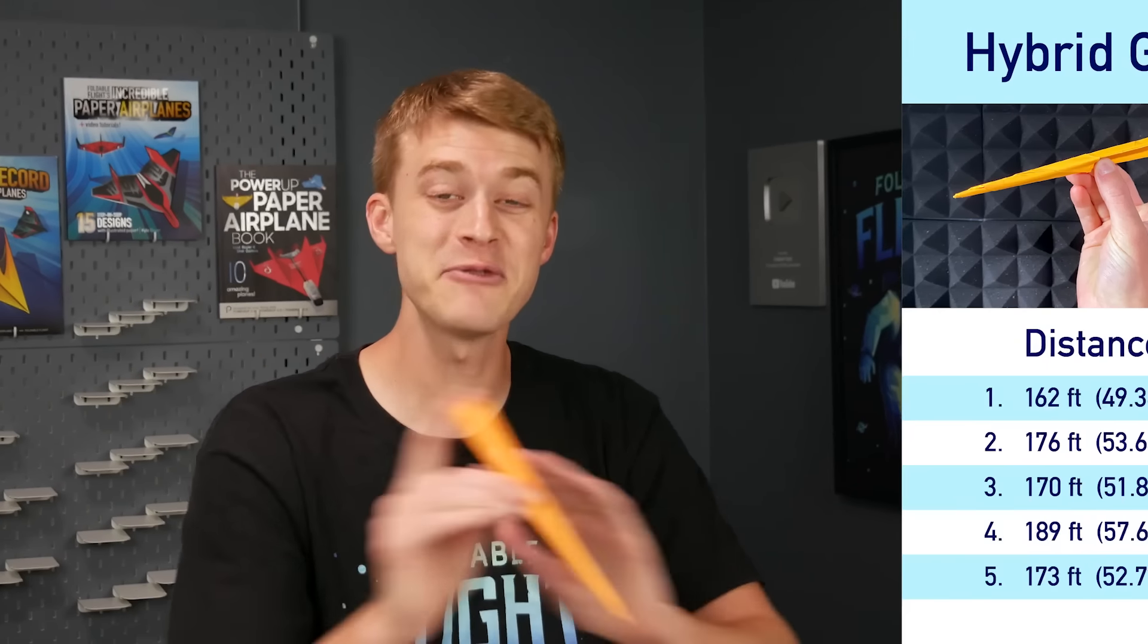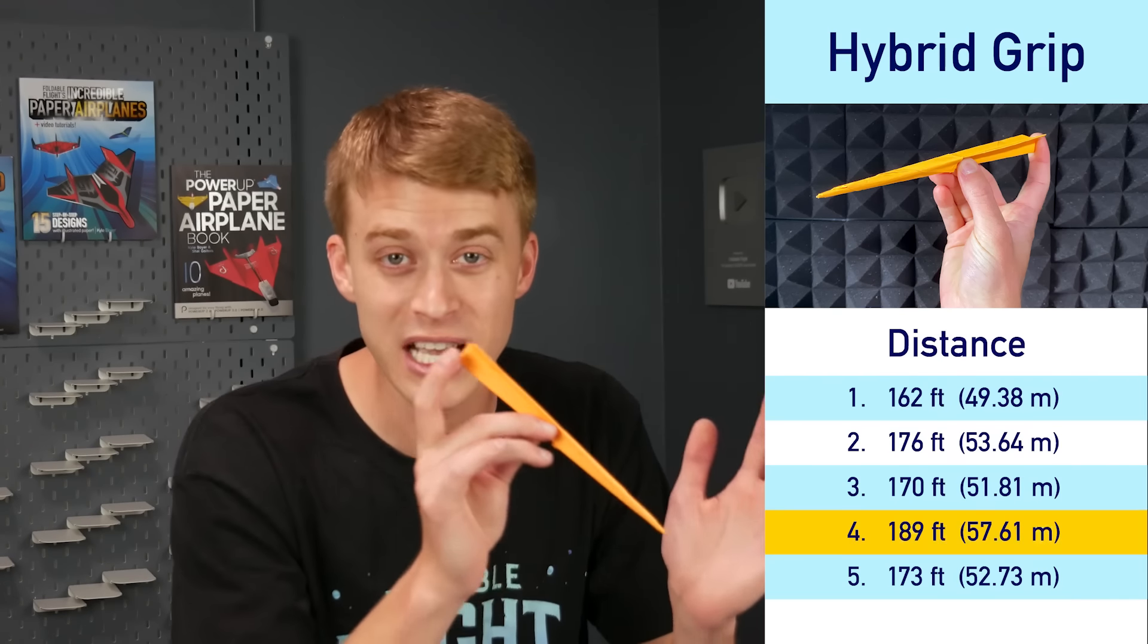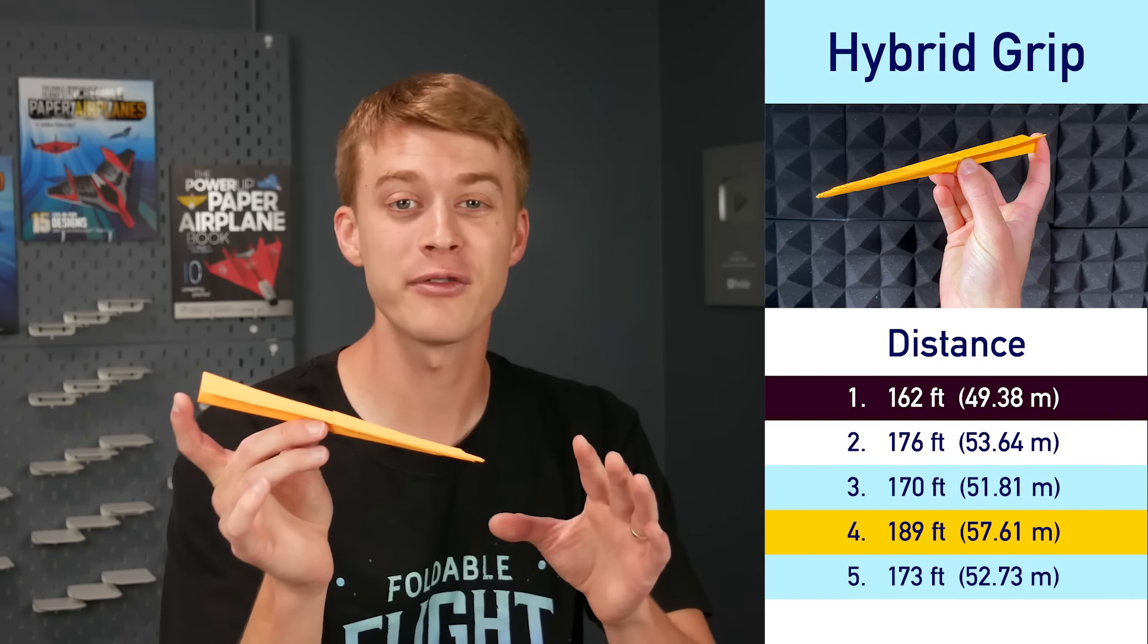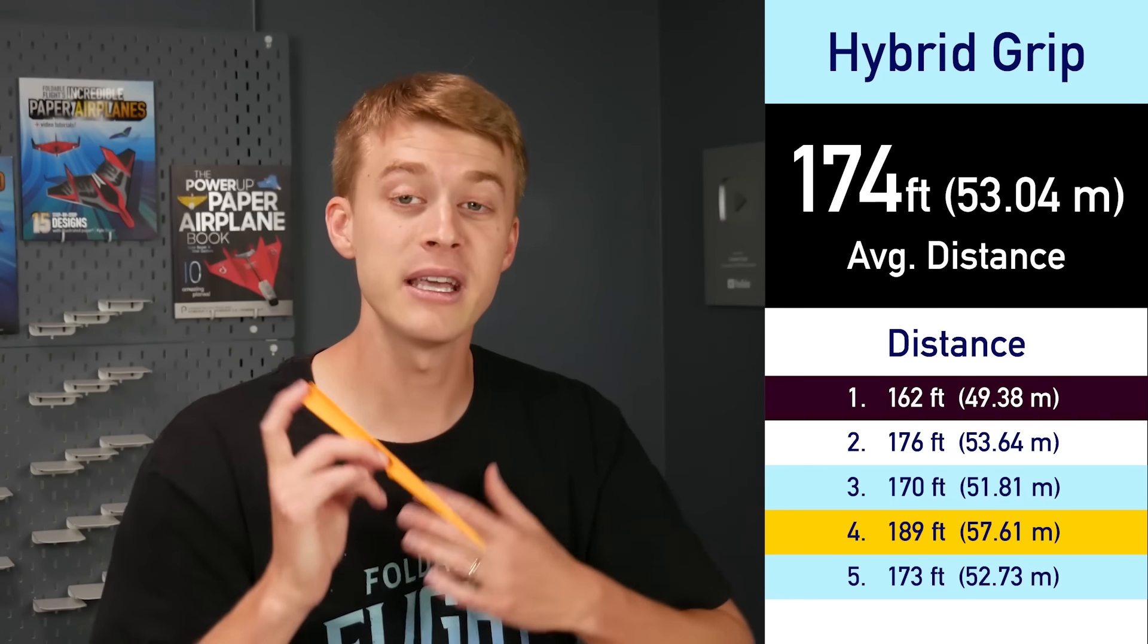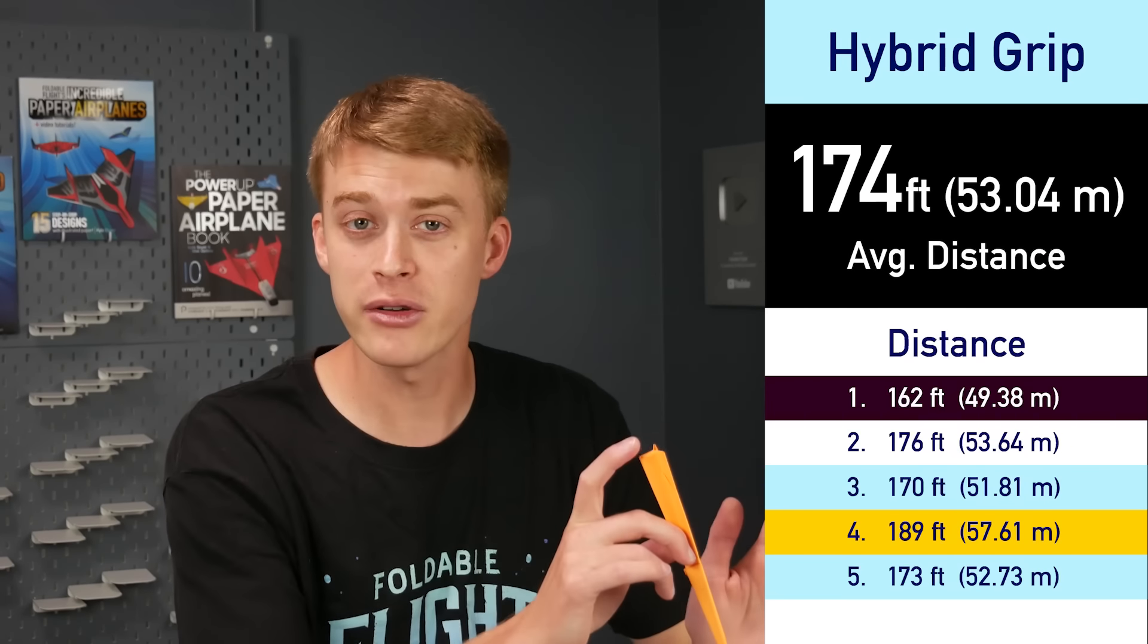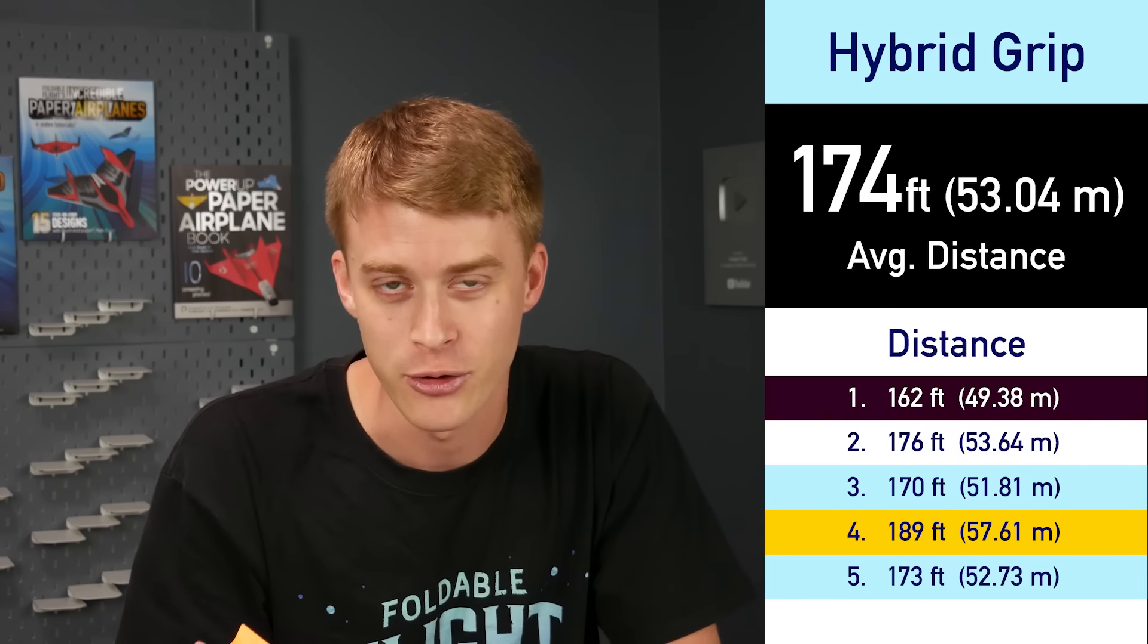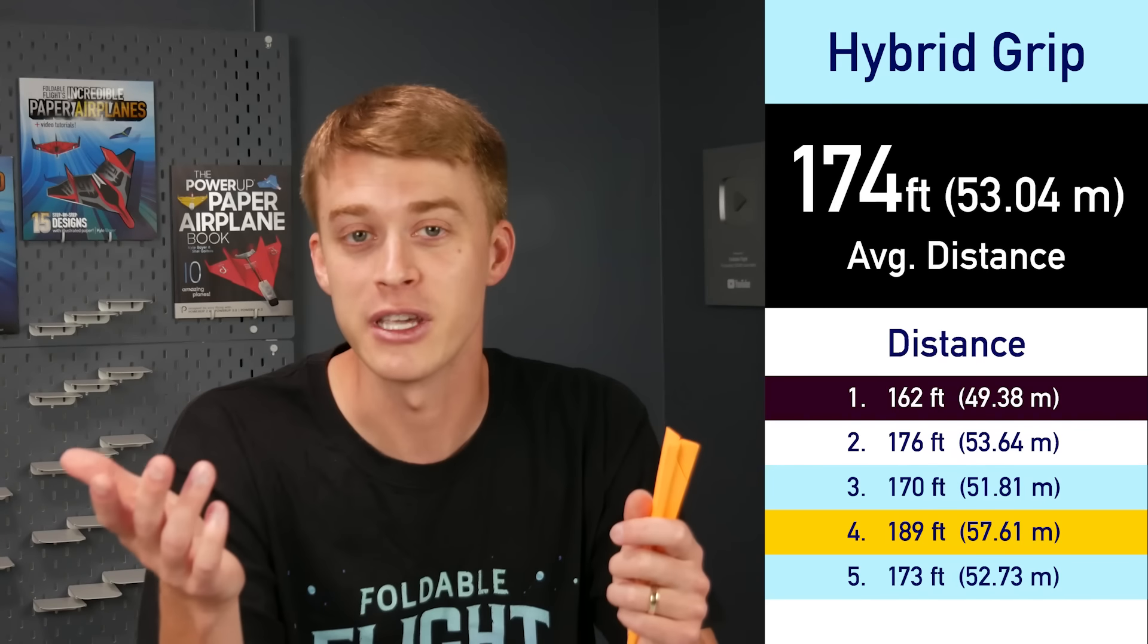But I still wanted to test this third technique where I'm holding it basically normally but putting my pointer finger on that back edge. And you can see from my results, this absolutely blew everything else out of the water for me. My best result was 189 feet. My worst result was still 164 feet. And my average was over 170. So for me, at least this was the best technique, but I'll be really curious to hear how each technique works for you and whether you can beat my scores in each category. So with all of that information at your disposal, let's finally get folding.